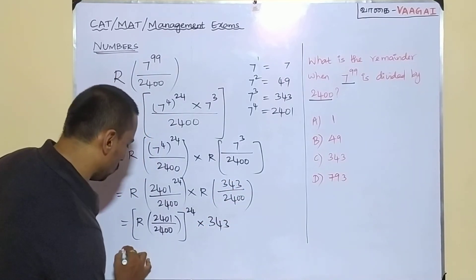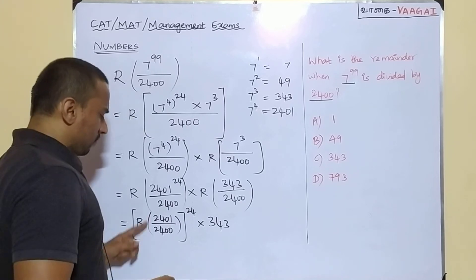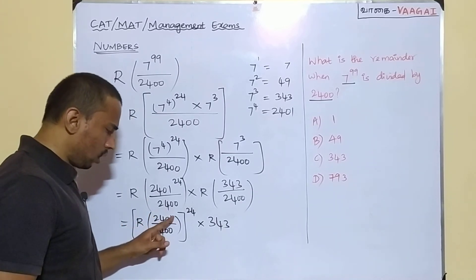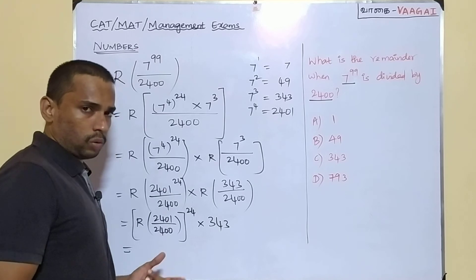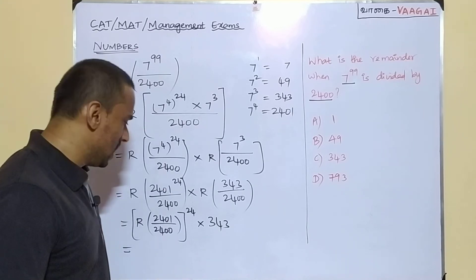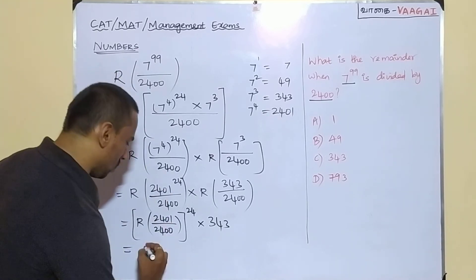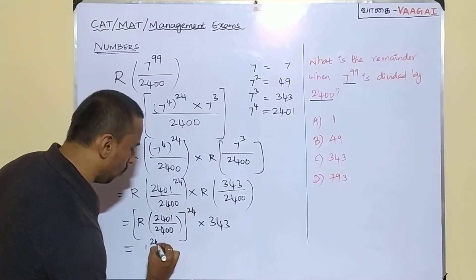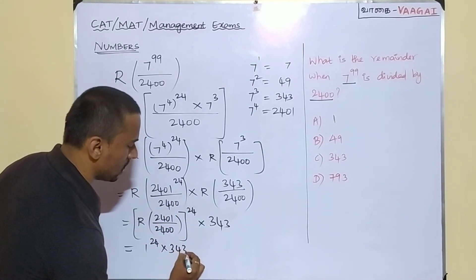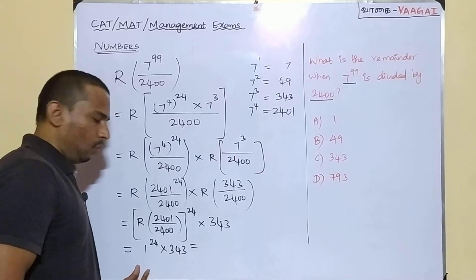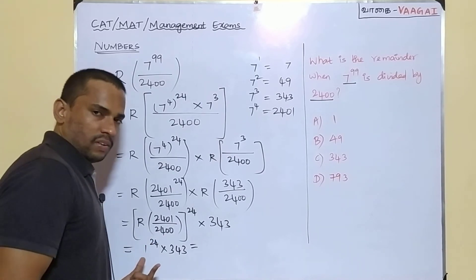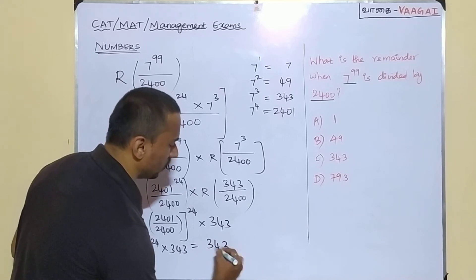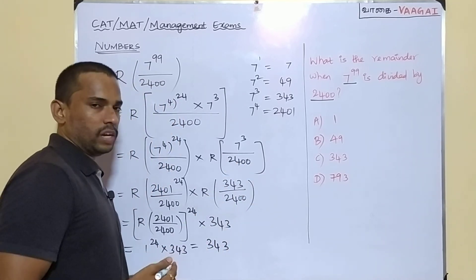Continuing, the remainder when 2401 is divided by 2400 is simply 1. So using the power property, we get 1 power 24 multiplied by 343. Since 1 power 24 is definitely 1, we have 1 into 343, which is finally 343. So 343 is going to be the answer.